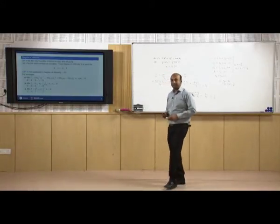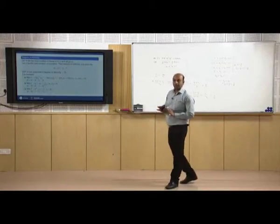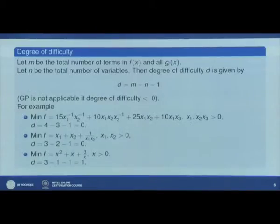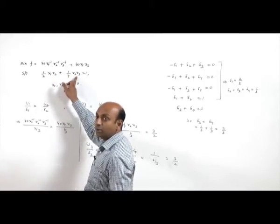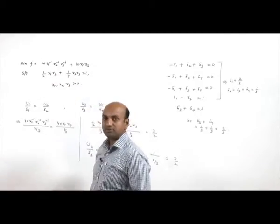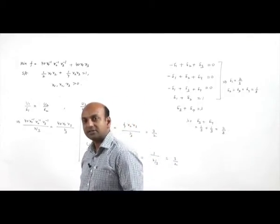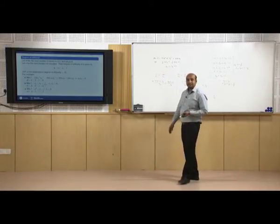Now let us discuss the degree of difficulty. Let m be the total number of terms in f(x) and all g_i(x), and n be the total number of variables. Then the degree of difficulty d is given by d = m - n - 1. For our example, there are 4 terms (m = 4) and 3 variables (n = 3), so d = 4 - 3 - 1 = 0. A degree of difficulty of 0 means we obtain a unique solution for the delta_i values.